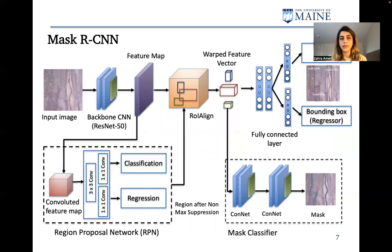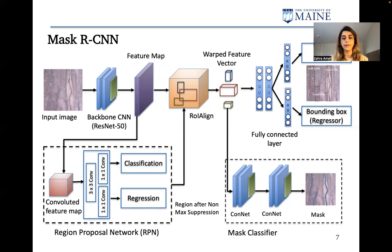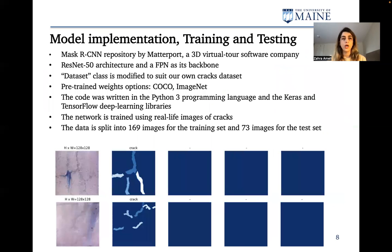We use the Mask RCNN algorithm, which in addition to classifying objects, is able to give us a bounding box around the objects and also provide a segmentation. This is very useful for our purpose, because if these segmentations are accurate, we can use them for crack quantification — for example, measuring crack length and widths. We used the Mask RCNN repository by Matterport, which is a 3D virtual tool software company. Its backbone is the ResNet-50 architecture, and the dataset class is modified to suit our own crack database.